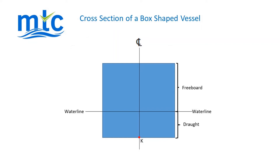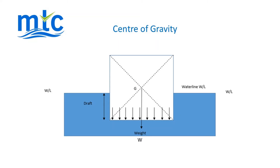To find the centre of gravity, draw diagonal lines from each corner of the vessel and where they cross is the centre of gravity. The centre of gravity of the vessel is the point where the total weight force W is considered to act vertically downwards.